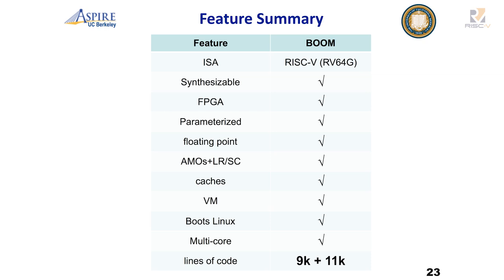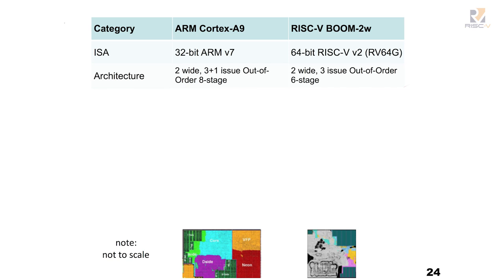In terms of the feature summary of BOOM: it is parameterizable, implements the full ISA, and with Chisel and RocketChip, BOOM is only 9,000 lines of code, with another 11,000 lines in RocketChip. By having a smaller line count, I'm hoping it makes it easier for other people to come in, understand what's been done, and improve on it.